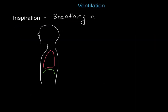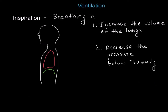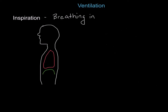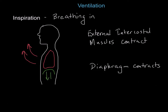Inspiration is the process of breathing in. In order to breathe in, the body must increase the volume of the lungs and decrease the pressure below 760 millimeters of mercury. To increase the volume of the lungs, the external intercostal muscles contract, pulling the rib cage up and out. Also, the diaphragm contracts, pulling the inferior part of the lungs down.